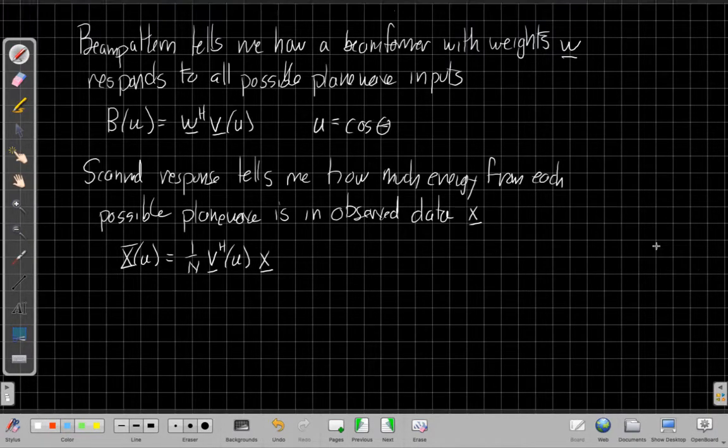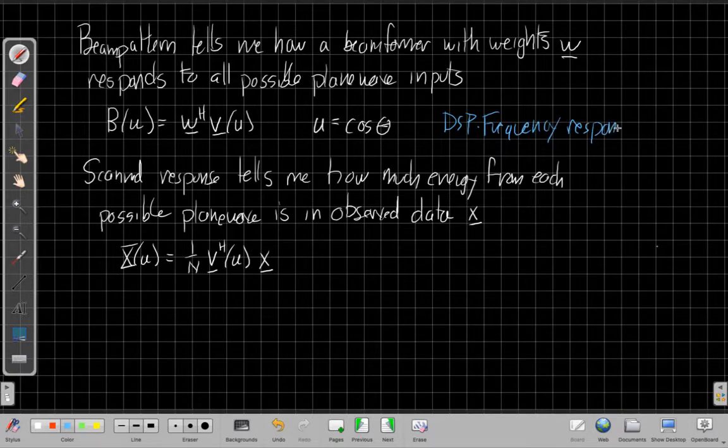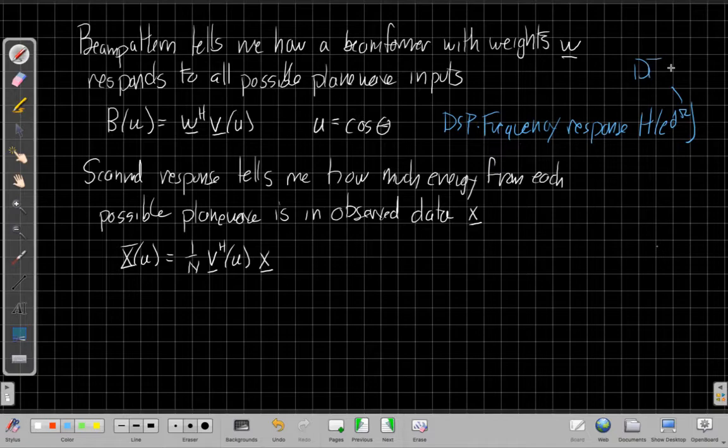Okay, so hopefully you remembered correctly. The beam pattern is a function that tells me how a beamformer with weights w responds to all possible plane wave inputs from different directions. In the video today, I'm going to work a lot with u. So we'd say the beam pattern in terms of the directional cosine u, B of u is equal to w Hermitian times v of u. So this is saying here are the fixed array weights. I have one set of array weights, and I'm going to look at the result of multiplying them against every possible array manifold vector for different plane wave directions. And so in analogy, this is the equivalent for DSP of the frequency response of a filter. So this is like my frequency response, H of e to the j omega. We'll use capital omega as my discrete time frequency here.